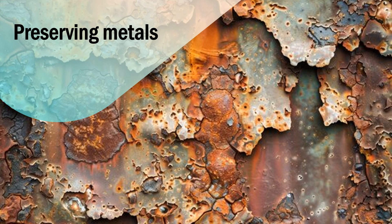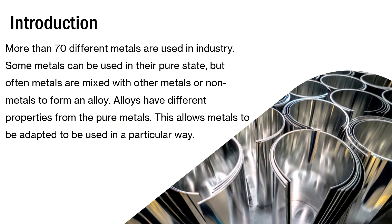Good morning everybody, this is MK and I'm back. Today we are looking at technology, grade 9, term 4, and the topic is preserving metals. More than 70 different metals are used in industry. Some metals can be used in their pure state, but often metals are mixed with other metals or non-metals to form an alloy. Alloys have different properties from the pure metals, which allows metals to be adapted to be used in a particular way.